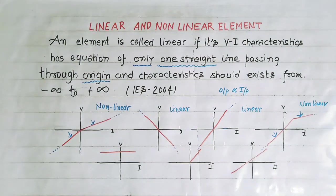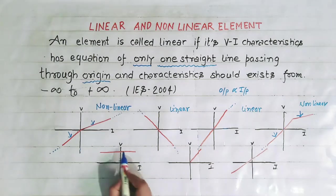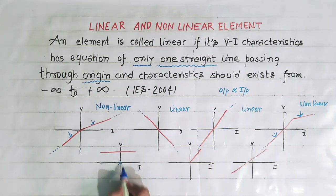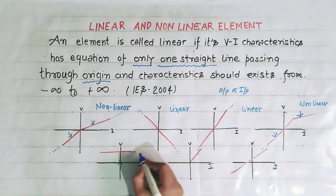Now see this — this characteristic is not passing through origin. That's why it is nonlinear.